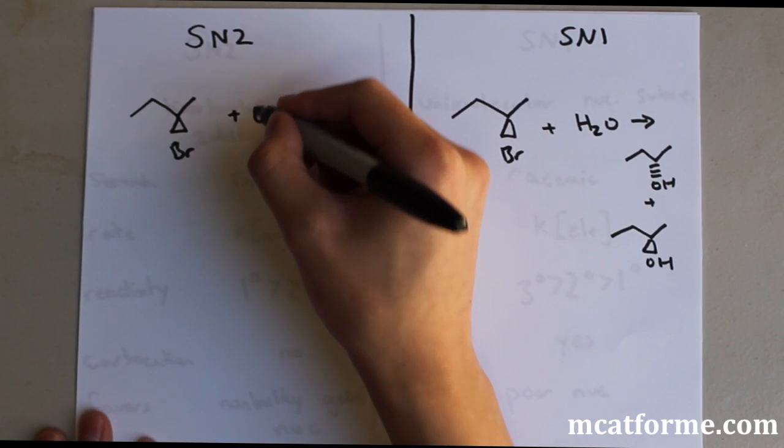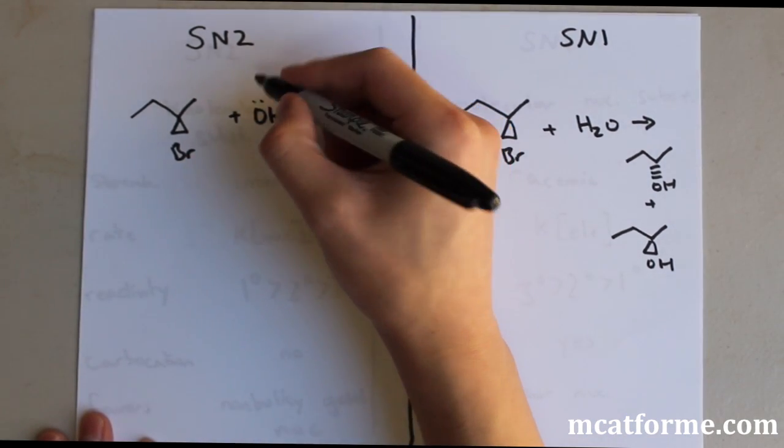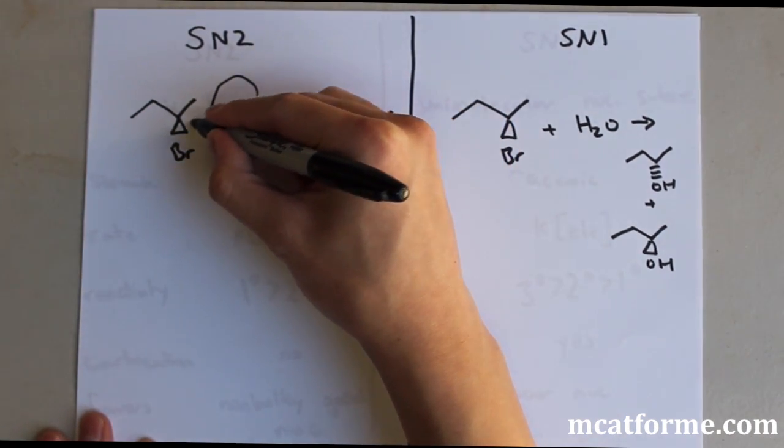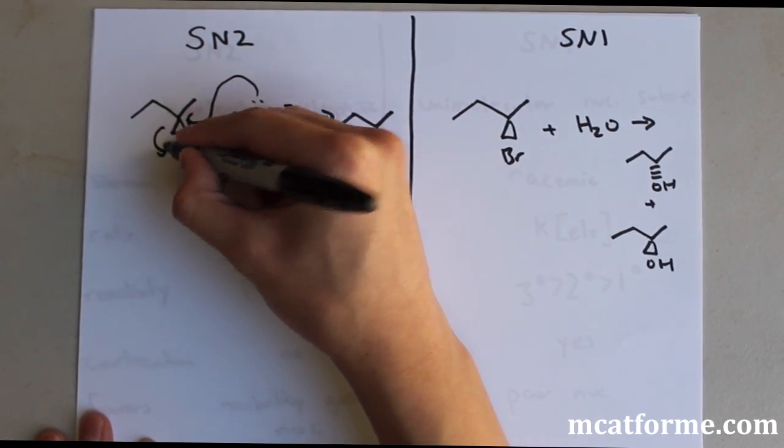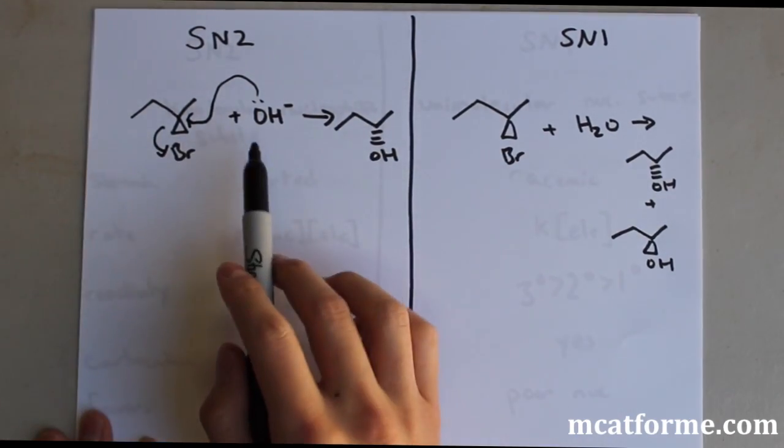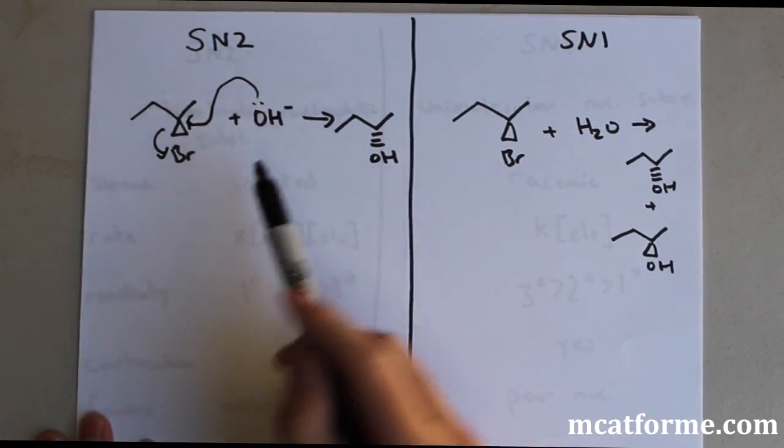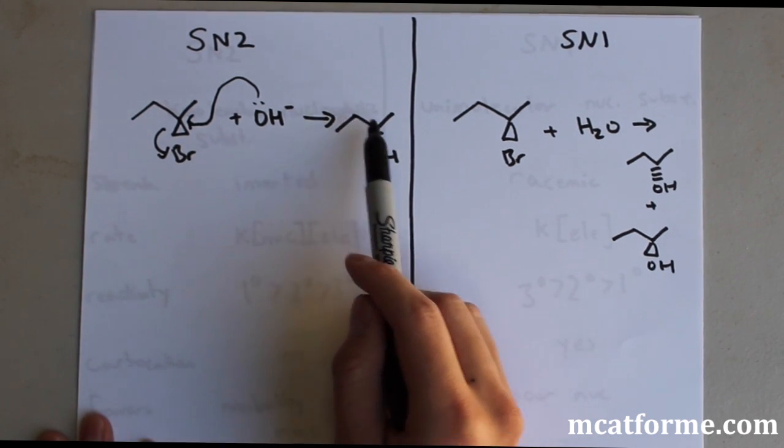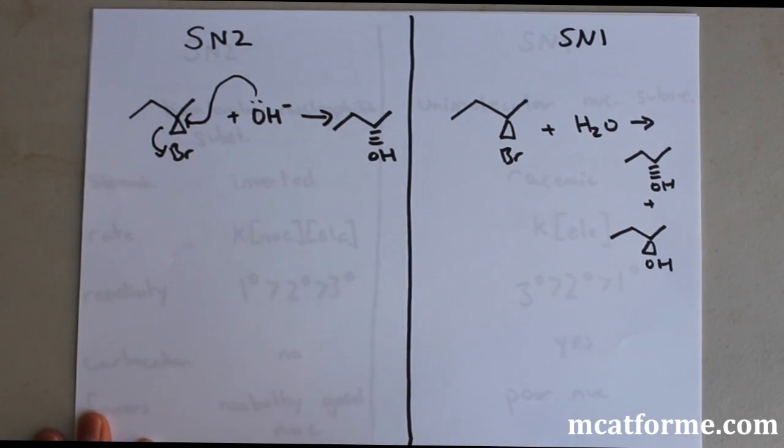The SN2 is very simple. We have a lone pair of electrons right here. What's going to happen is it's going to do something called a backside attack. It's going to attack from the back because there's less steric hindrance, and this OH will be now from the reverse direction. Pretty simple.